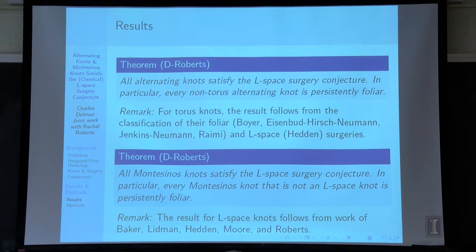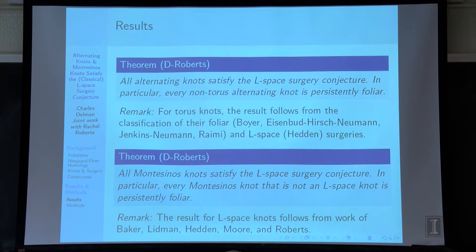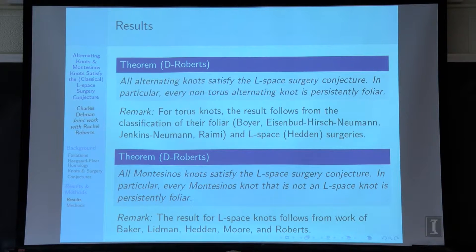All alternating knots satisfy the L-space surgery conjecture, and in particular, every non-torus alternating knot is persistently foliar. For torus knots, their surgeries are well understood. The result for torus knots follows from the work of Boyer, Eisenbud, Hirsch, Neumann, Jenkins, Neumann, and Raimi. You get either lens spaces, connected sums of lens spaces, or Seifert-fibered manifolds with up to three singular fibers. The Seifert invariants tell you whether the manifold is foliar or not, and whether it's an L-space depends on the genus. The only torus knots relevant here in either the alternating or Montesinos setting are the T(2,n) torus knots.